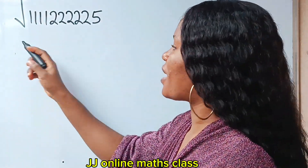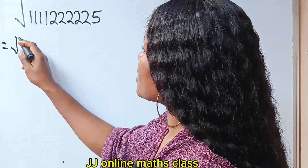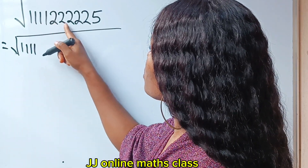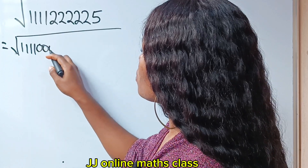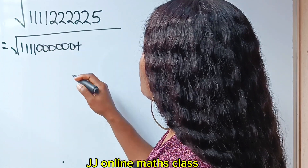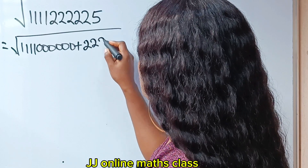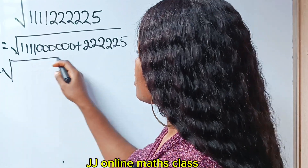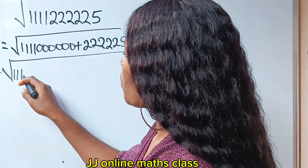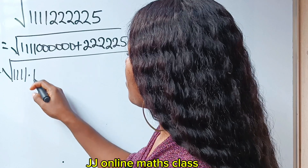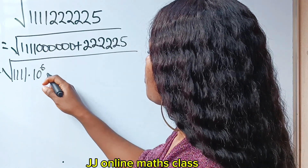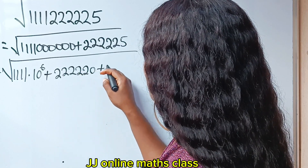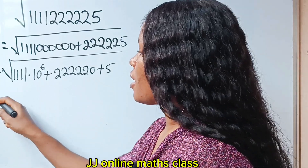To solve this is not easy, but we can do it. Let's simplify this first. We have 111111 — that's one two three four five six digits — plus the whole of 222220, plus 5. This is the same as the square root of 1111 multiplied by 10 to the power of 6, plus 22222 times 10 to the power of zero, plus 5.